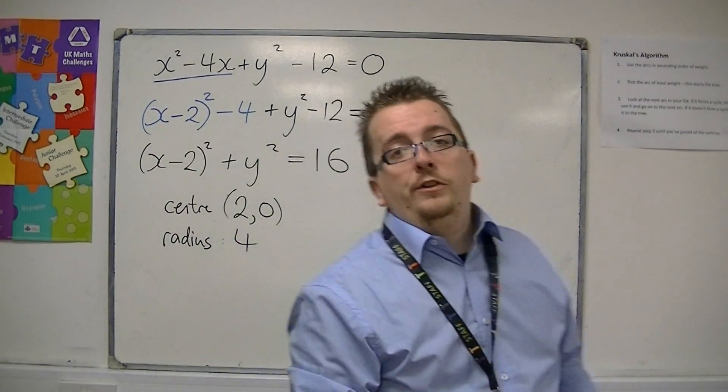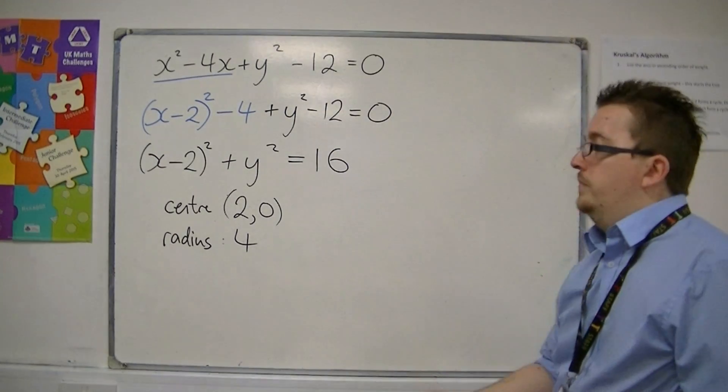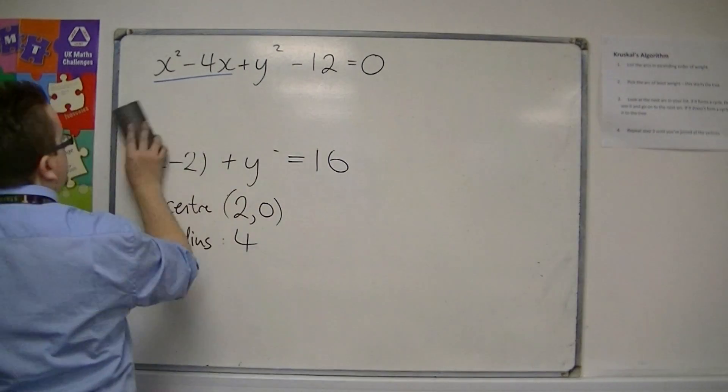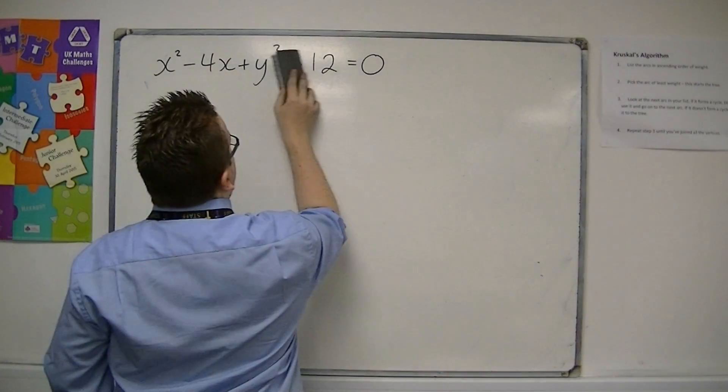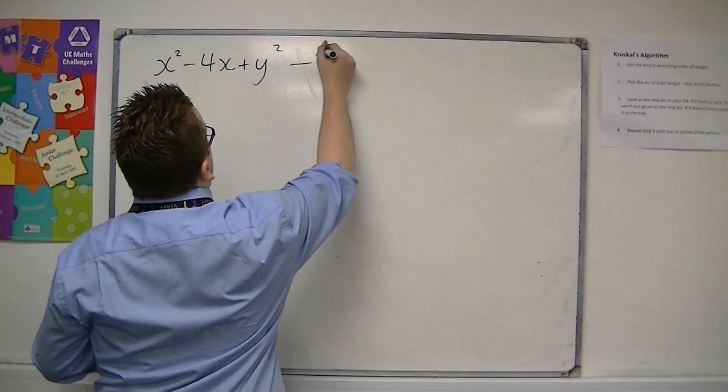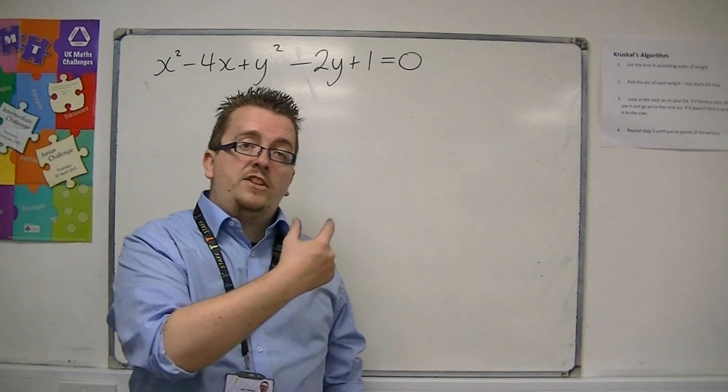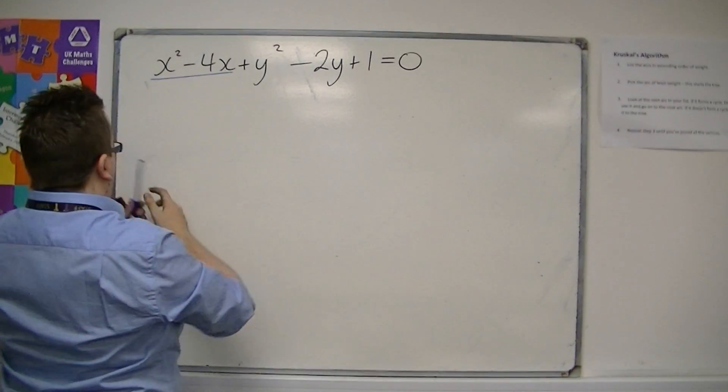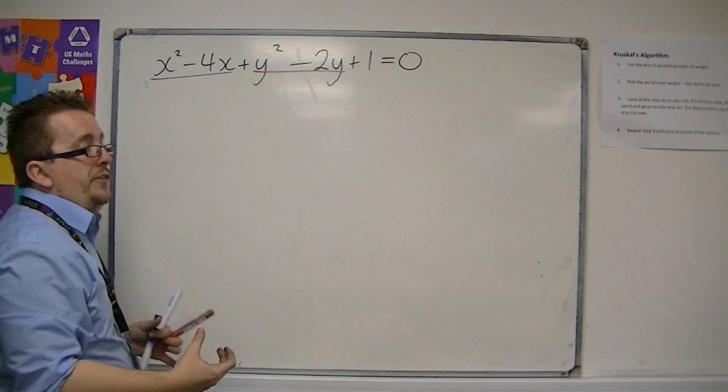So that is how you can convert an equation like this into the equation that has the format that we are used to. I'm going to go through one more example. Let's say I instead had this. It looks fairly similar, but now we have this constant, this linear term in y as well. And what we're going to do is we are going to complete the square on both parts this time. This is the more common style that you will see.